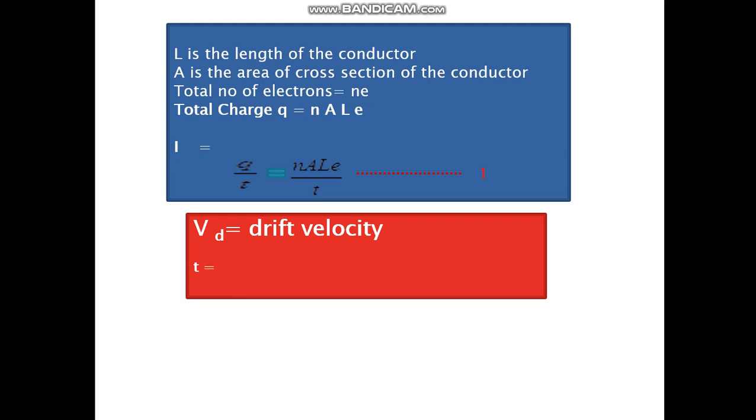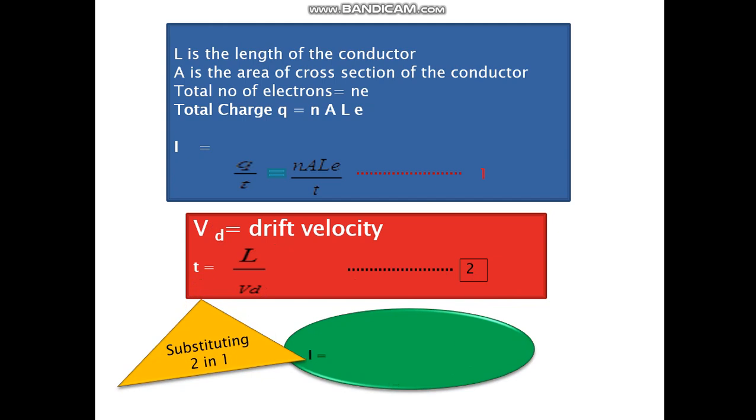And we know velocity is distance upon time. So time will be the distance L, the length of the conductor, upon the velocity, the drift velocity VD. So we can substitute equation 2 in 1 and get another equation for current I is equal to N A L E upon L upon VD. That is N A E VD. So you have got equation for I as Q by T, N A L E upon T, as well as N A E VD. So three equations for current.